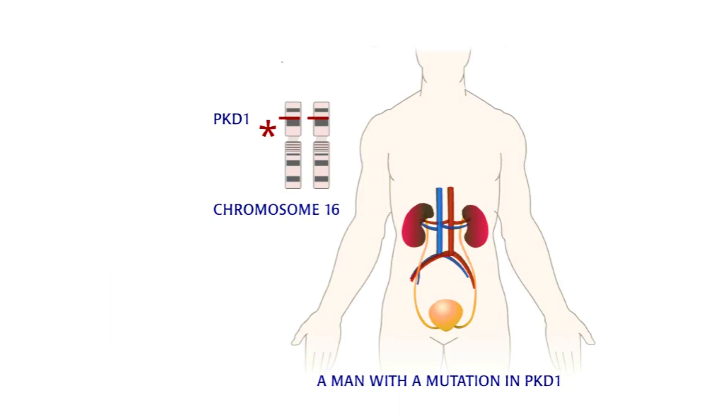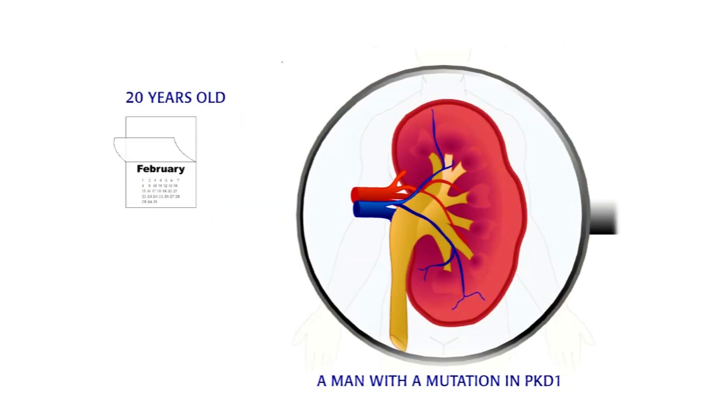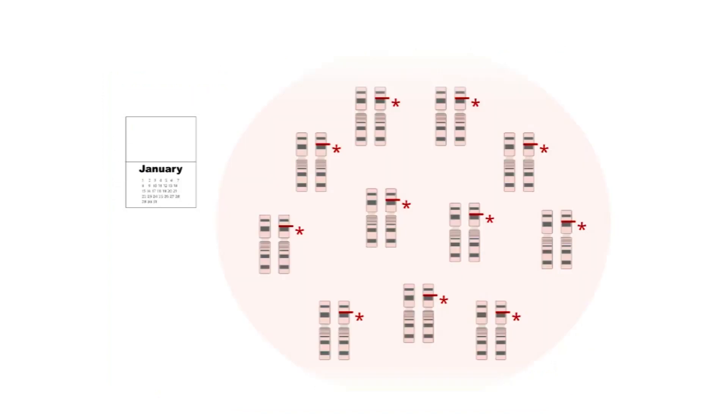As there are two copies of each gene in the body, a person with a mutation in one of the PKD1 or PKD2 genes will eventually develop polycystic kidney disease. There are no directly adverse consequences of having only one working copy of PKD1 or PKD2.